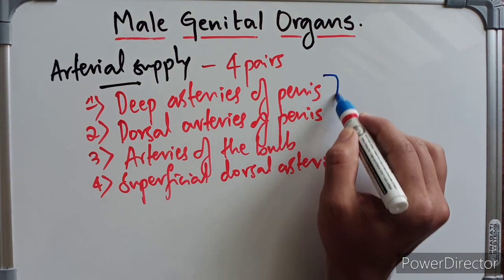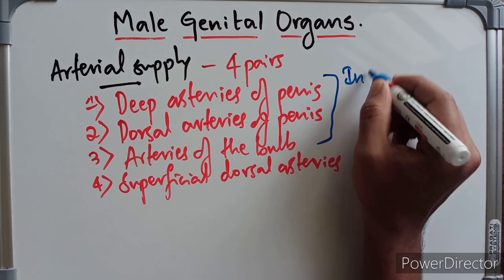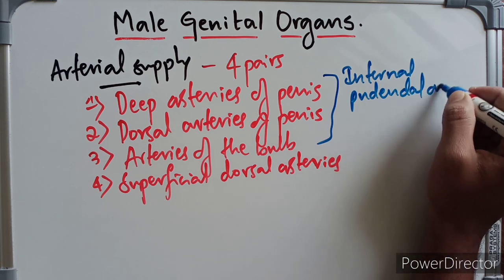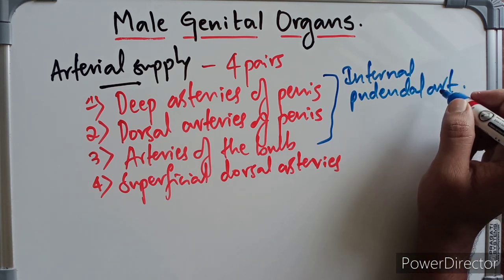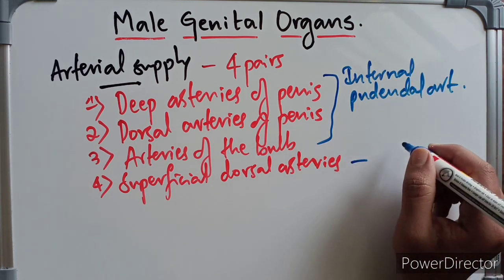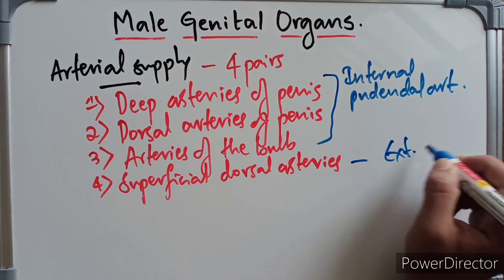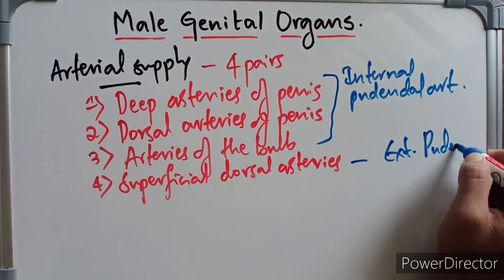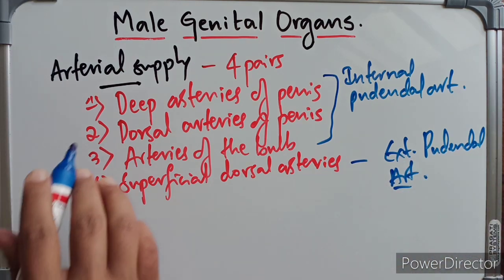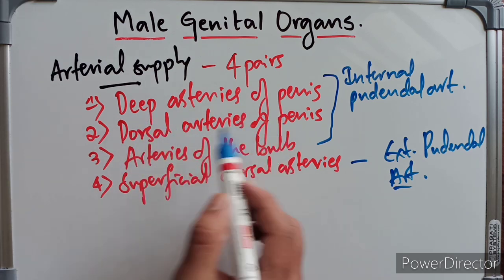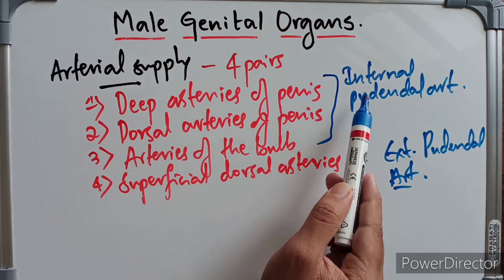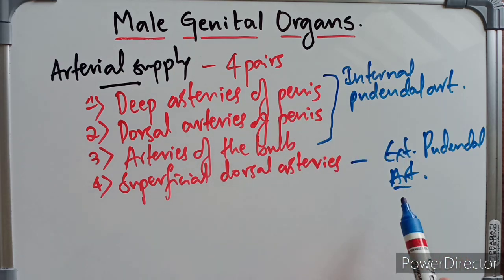Out of these four pairs, the first three pairs arise from the internal pudendal arteries, which is a branch of the anterior division of the internal iliac. The last pair comes from the superficial external pudendal arteries, which are branches of the femoral arteries.